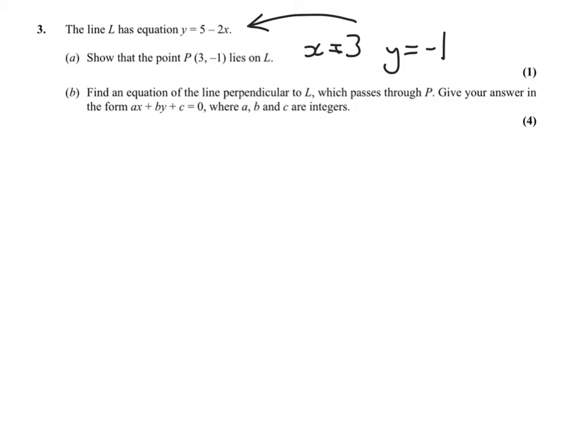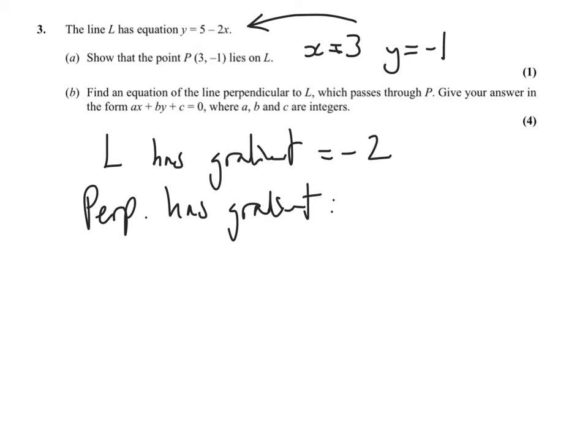Find an equation of the line perpendicular to L which passes through P. So in order to find a line that's perpendicular, we've got the line L. L has a gradient of -2. Therefore the perpendicular has gradient of -1 over -2, which equals 1/2.